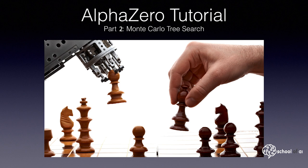Welcome back to this series on AlphaGo Zero. In this episode, we are going to take an in-depth look into Monte Carlo Tree Search. By the end of this video, you should fully understand the process which AlphaGo Zero uses to select moves. Rather than examining the entire move tree with brute computing force, we are going to use a deep neural network to predict the most promising moves to explore. When we are generating the training data through self-play, we want to add some randomness to this move selection in order to promote exploration.